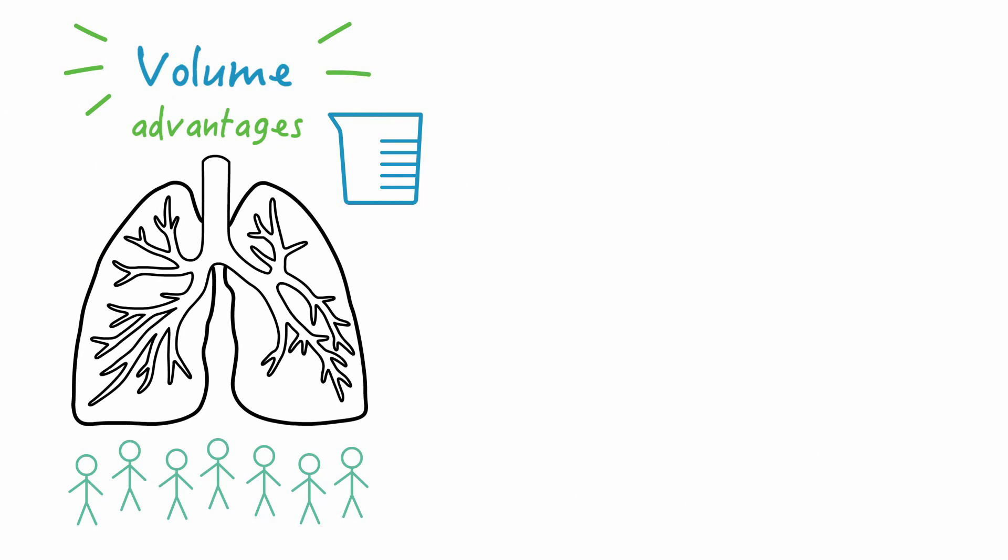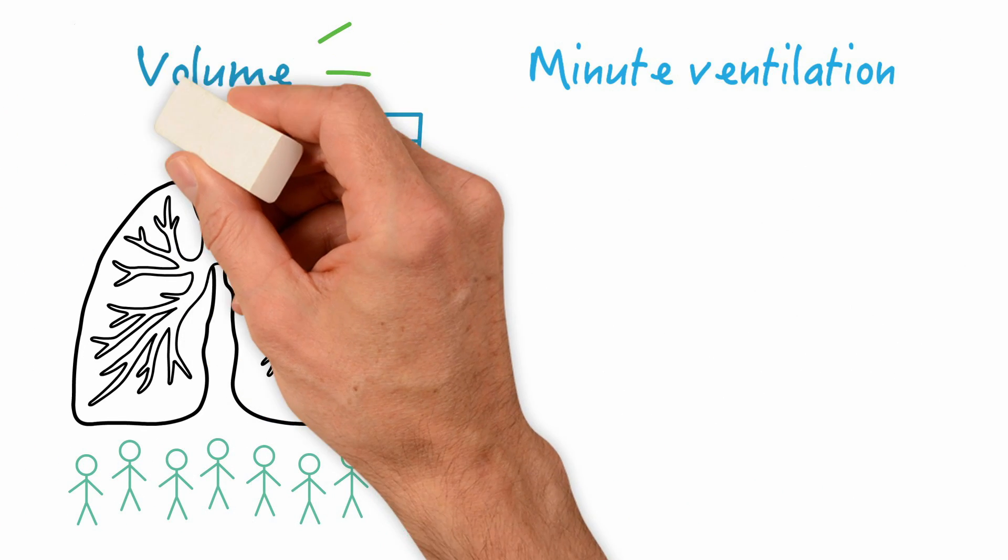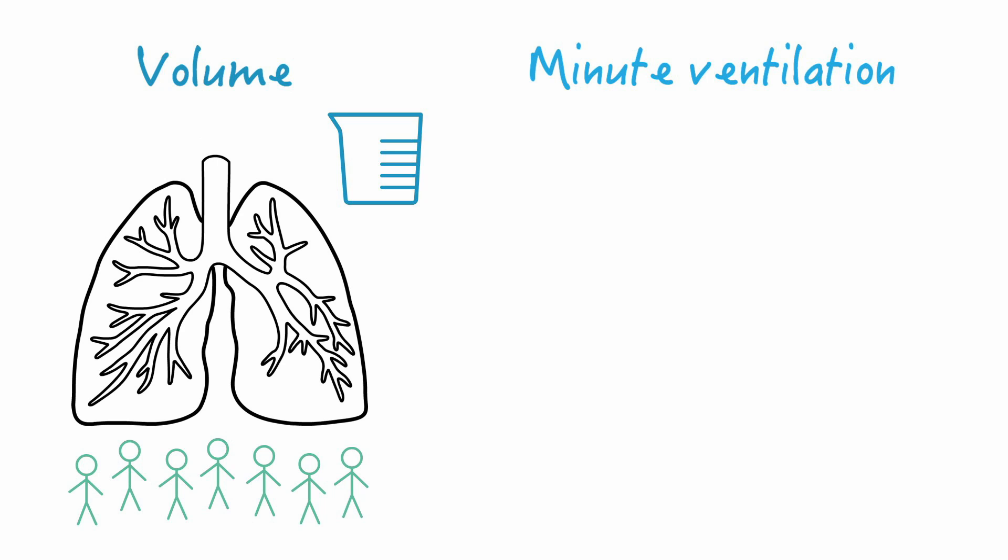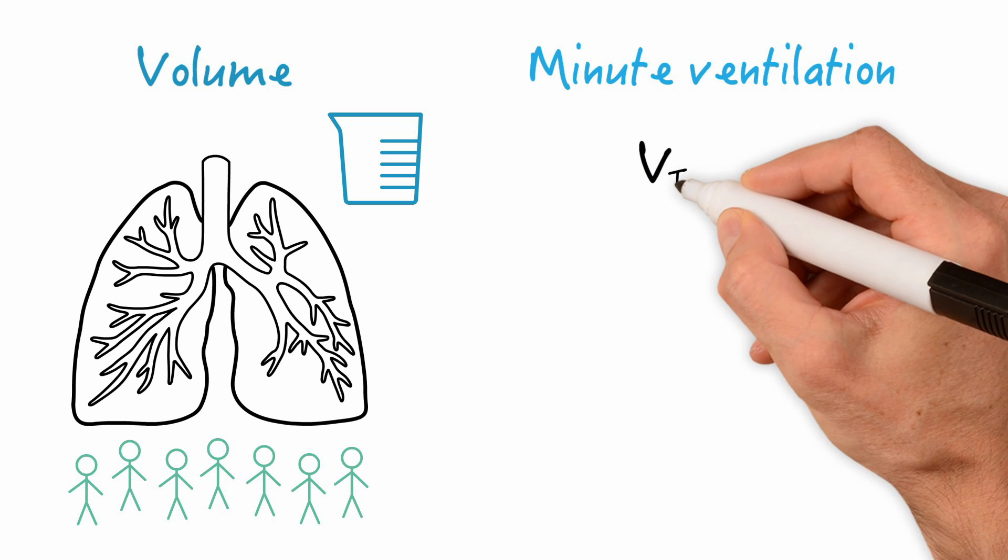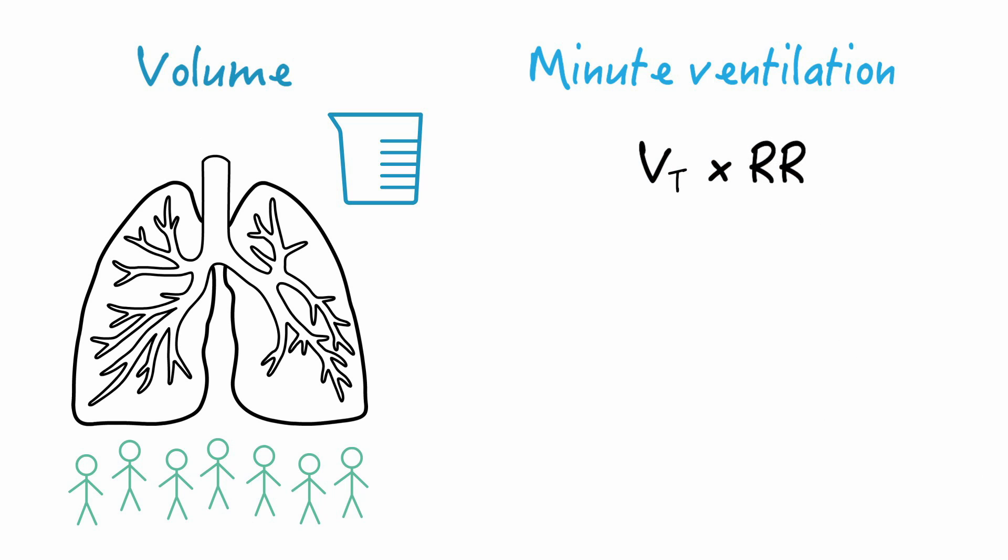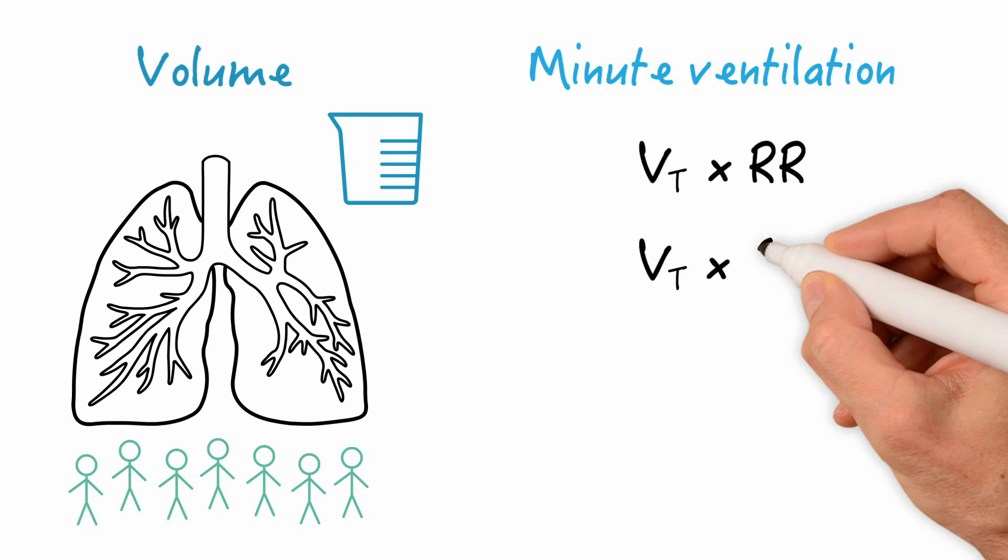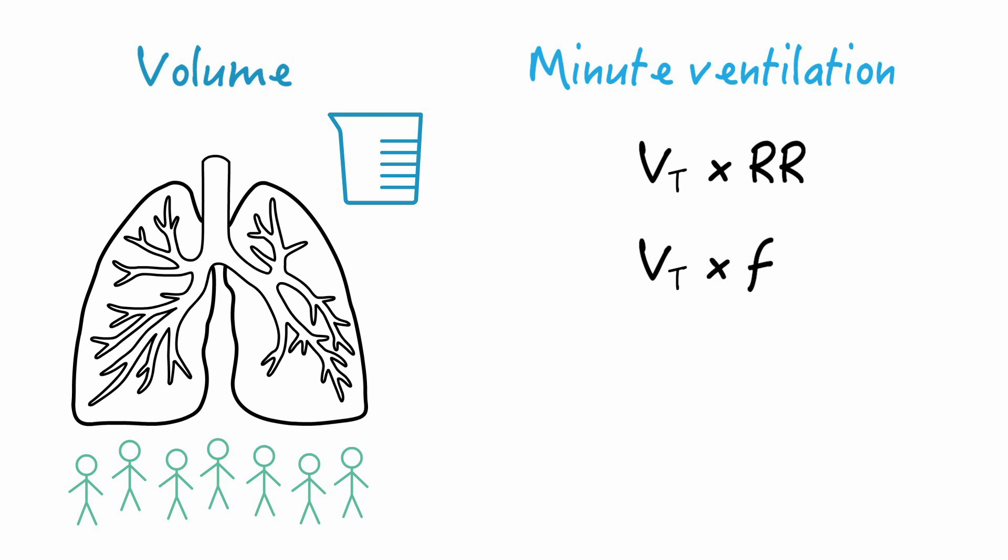And the reason for that is minute ventilation. Minute ventilation is the result of the tidal volume times the respiratory rate, and it is expressed as VT times RR. Sometimes it is expressed as VT times F, where F represents the frequency or the number of breaths in a minute, which is the same as respiratory rate. These expressions are often used interchangeably, but minute ventilation represents the amount of volume used to ventilate or remove CO2 in one minute.